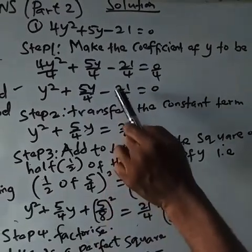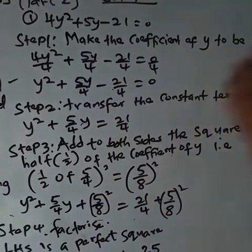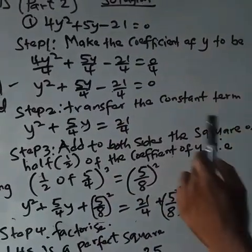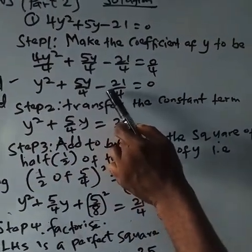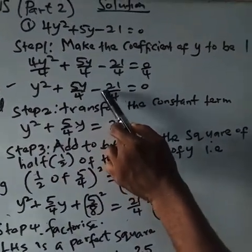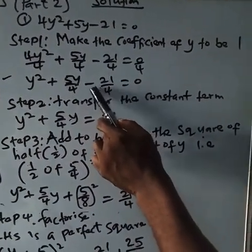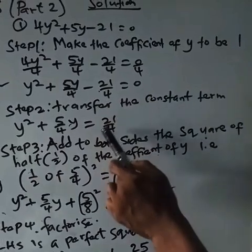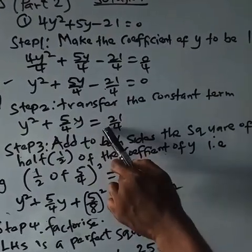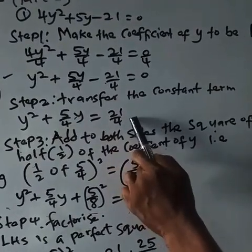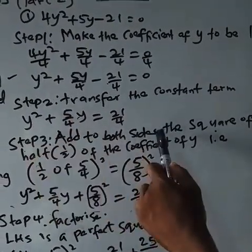Step two: transfer the constant term to the right-hand side. Don't forget the constant term here has a minus sign. When you transfer it across the equality sign, it becomes plus, so it becomes plus 21 over 4 on the right-hand side.